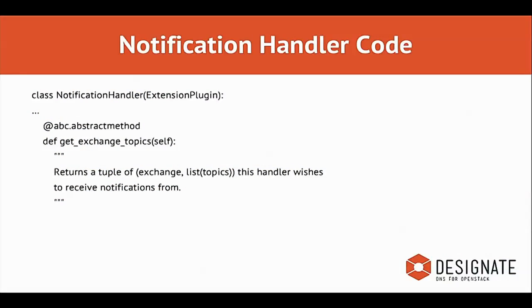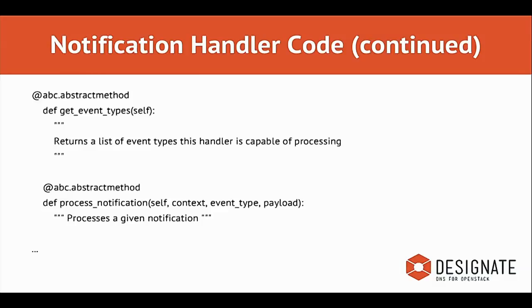When you extend the class for the notification handler, there are only three methods to implement. First, a method telling Sync which exchange topic you want to consume. Second, which event types this notification handler will handle. Third — and the main code — is the process_notification method, where you take the payload, context, and event type and turn them into a DNS operation. For example, you take the payload and create an A record, or create both an A record and a pointer record.